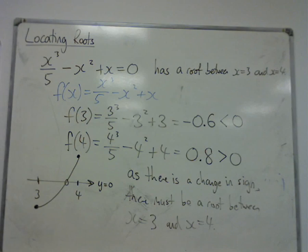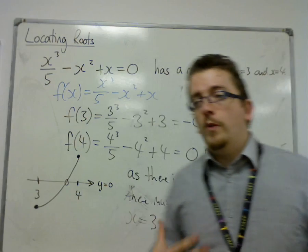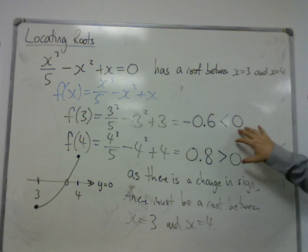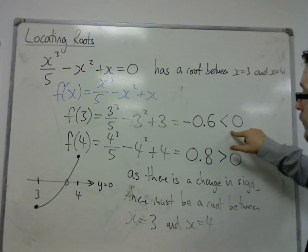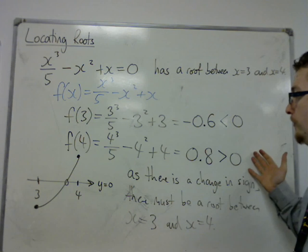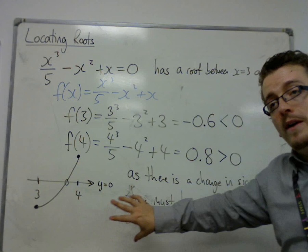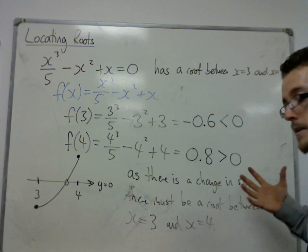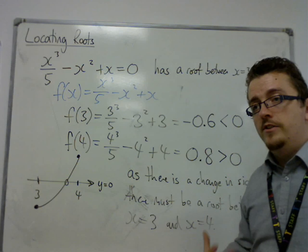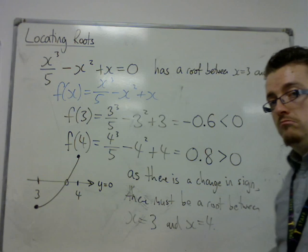Here is an example of the question in action. The key elements are making sure you substitute in and identify that one is less than 0, one is greater than 0, one is negative and one is positive. And then make sure that you have a concluding statement to make sure you're telling the exam that you understand what that is showing you.